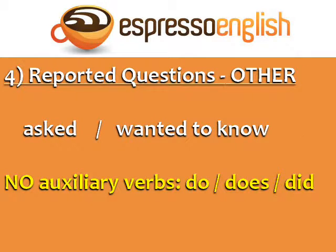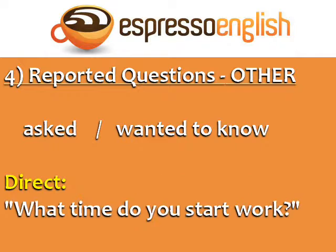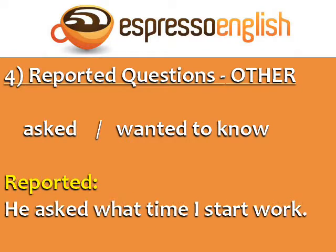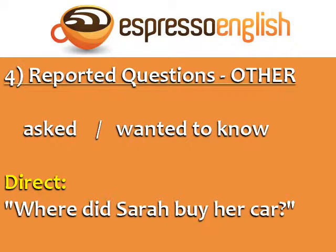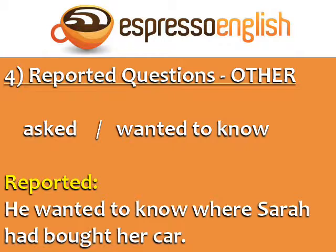To report other questions that are not yes-or-no questions, we use 'asked' and 'wanted to know' with no auxiliary verbs do, does, or did. For example — Direct: 'What time do you start work?' Reported: 'He asked what time I start work.' There is no auxiliary verb 'do' in the reported question. Direct: 'Where did Sarah buy her car?' Reported: 'He wanted to know where Sarah had bought her car.' Again, there is no auxiliary verb 'did' in the reported question.